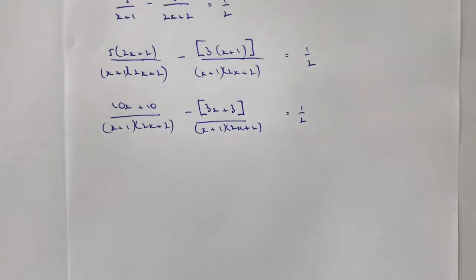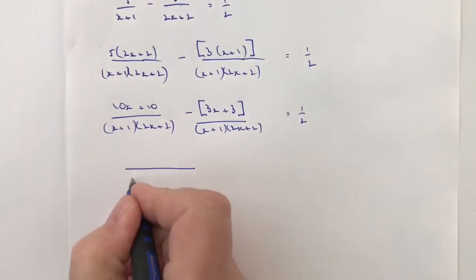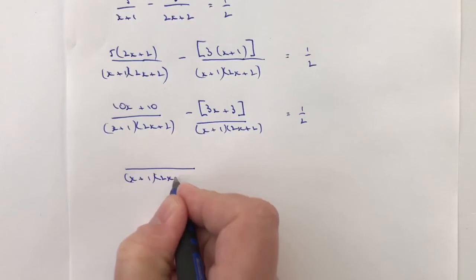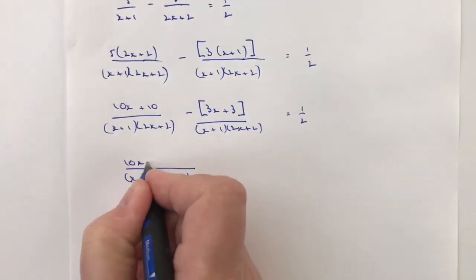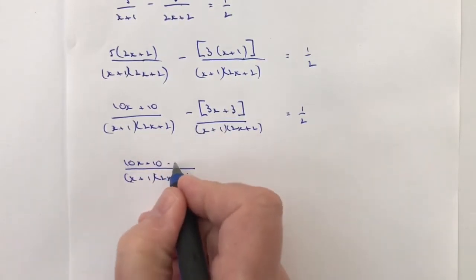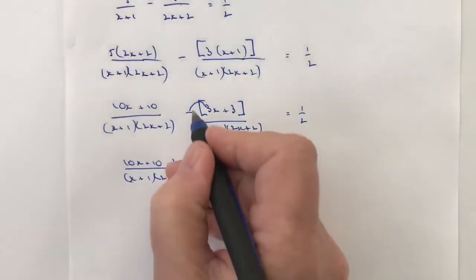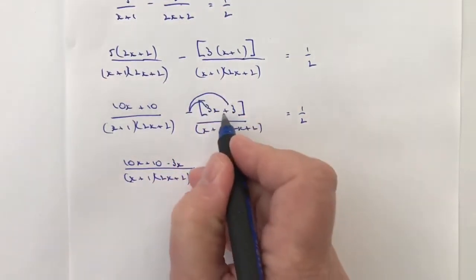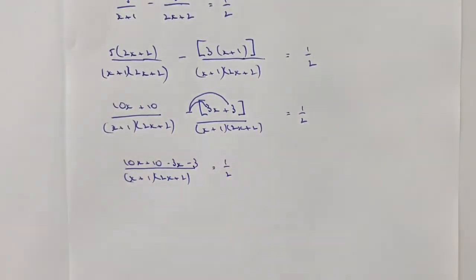Let's start now getting rid of brackets and let's see if we can bring these two together as a fraction so the bottom now is going to be exactly the same. I'm going to leave that as x plus 1 times 2x plus 2. Now the top I've got 10x plus 10 and I've got minus 3x but don't forget that minus 3x or the minus also affects this plus 3 here so that's going to be minus 3 and that's going to equal a half.